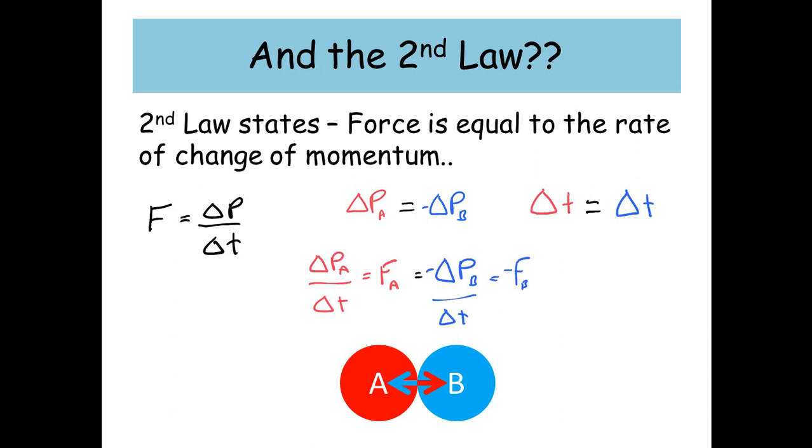So if we then apply Newton's second law to each of these, we've got the change in momentum of A over the time taken is equal to the force of A. And that's equal to minus the change in momentum of B over the time taken, which is minus F subscript B. So F and B have got the same magnitude, but they have opposite directions. So this is kind of like a bit of a proof of Newton's third law.